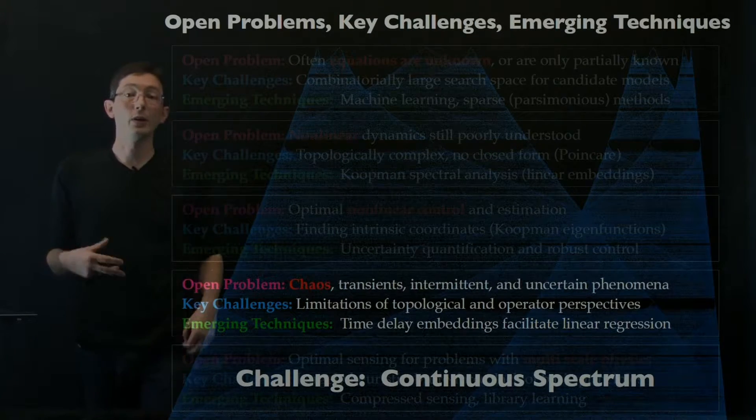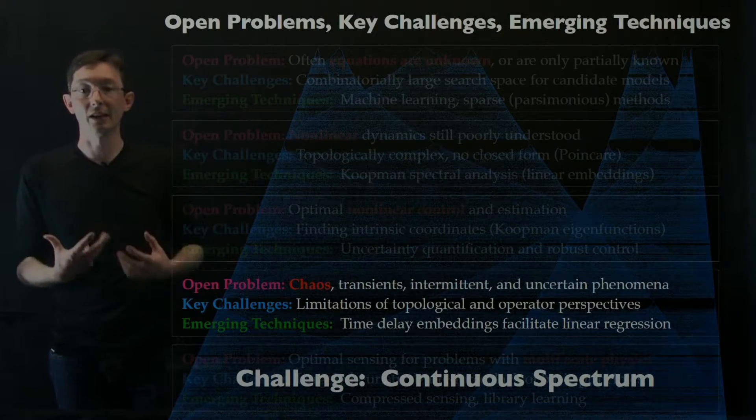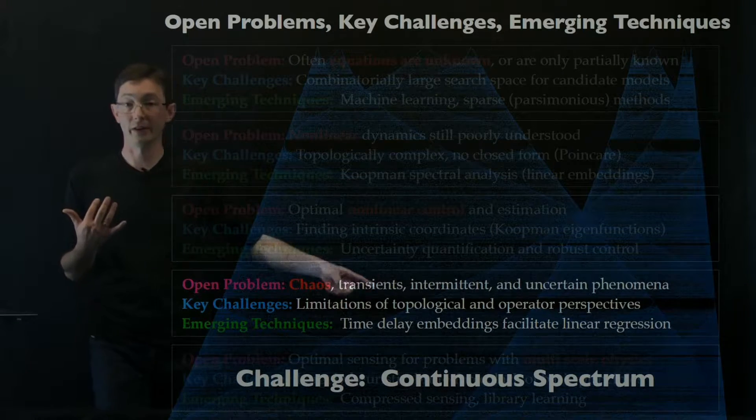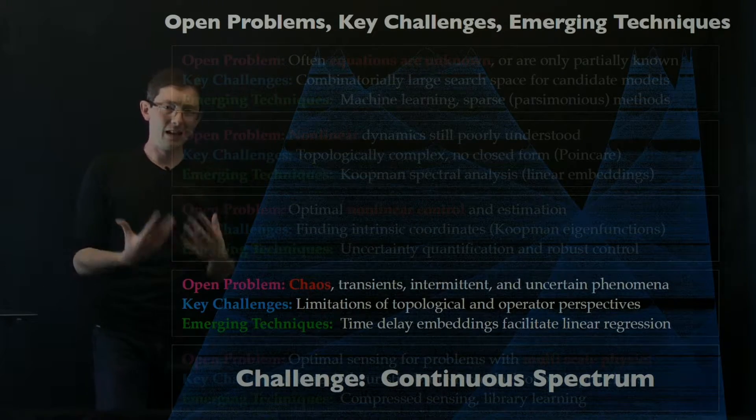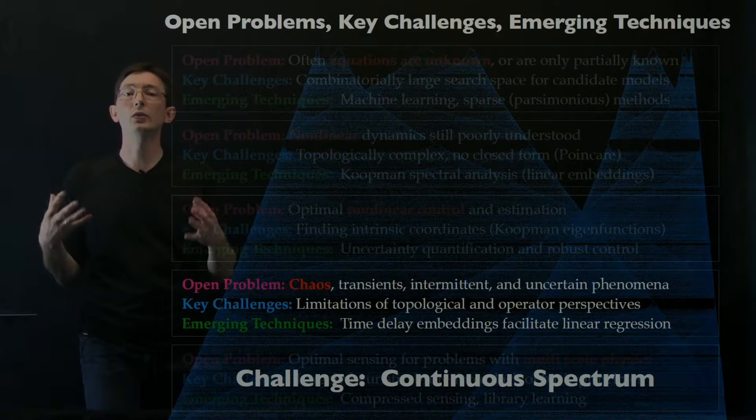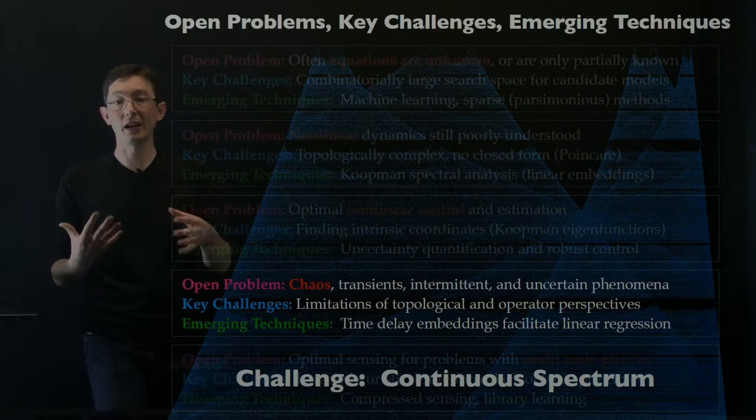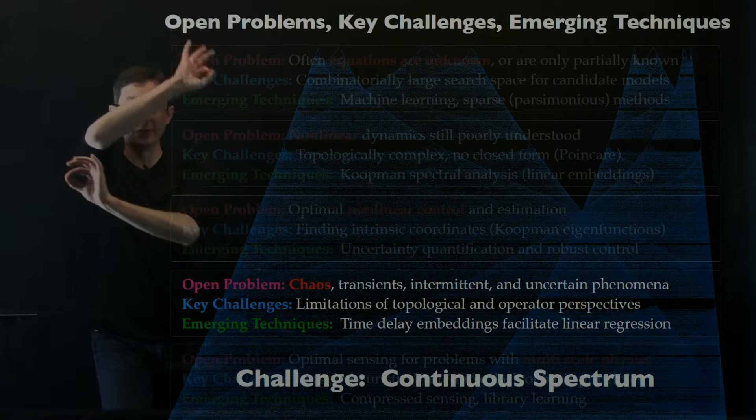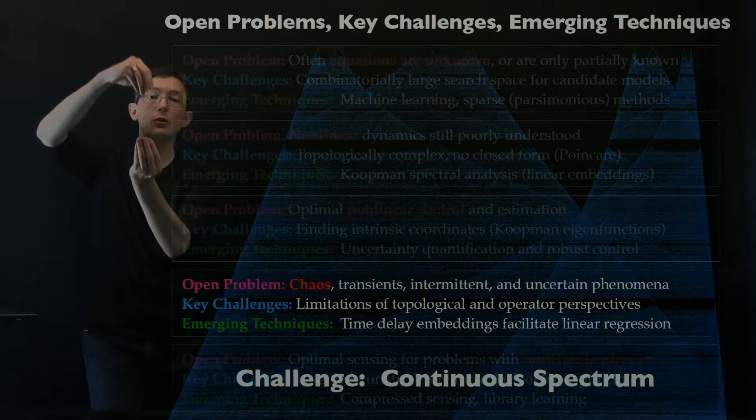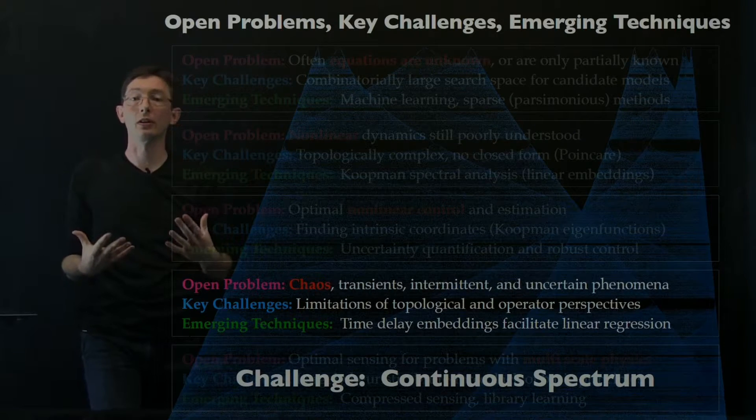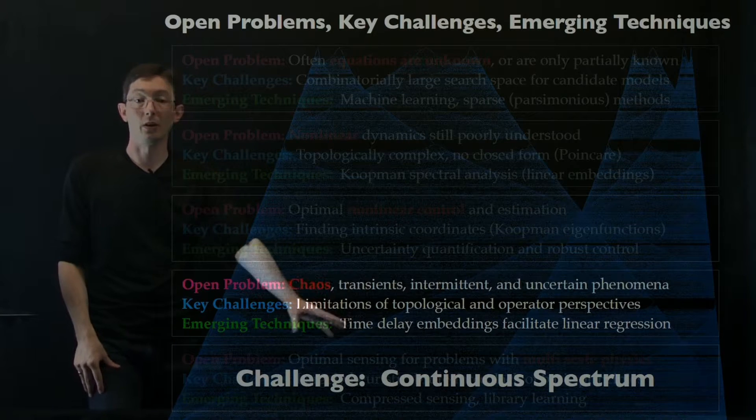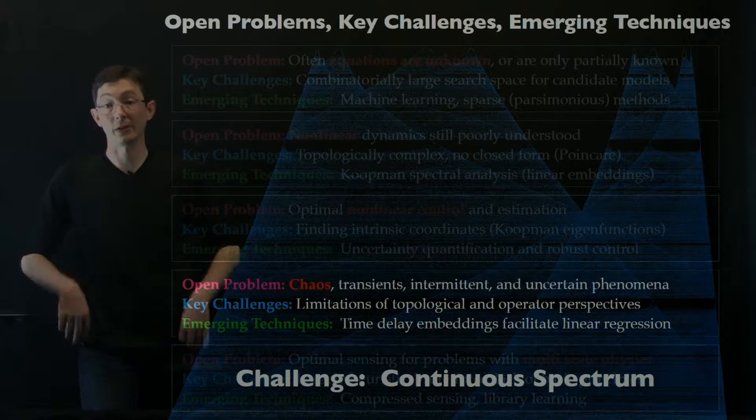What I want to talk about now is a particularly challenging set of systems that exhibit chaos, transients, intermittent phenomena. This is also known as continuous spectrum dynamical systems. These are dynamical systems where the Koopman operator doesn't have discrete eigenvalue spectrum, but has a continuum of eigenvalues. These are much harder for data-driven representation, and there's a lot of interesting work going on in this continuous spectrum world right now.